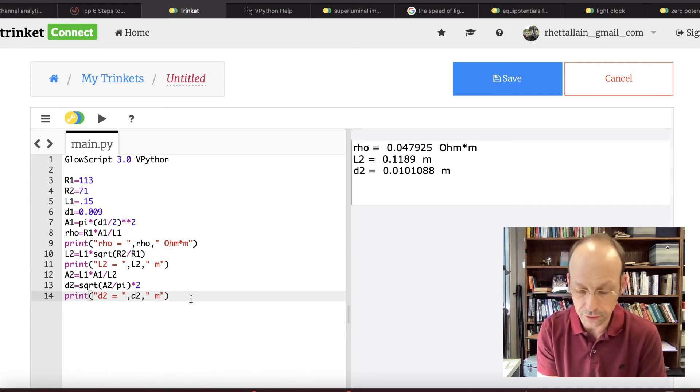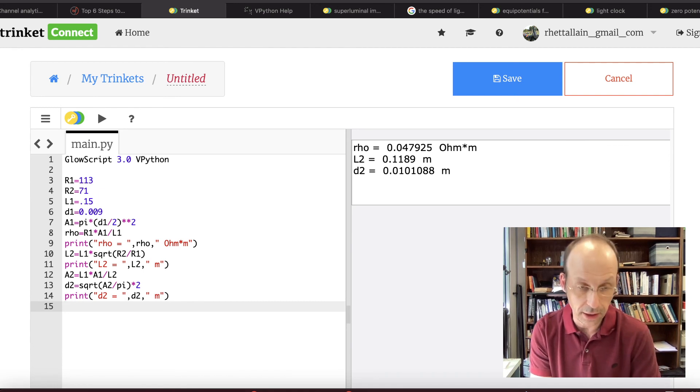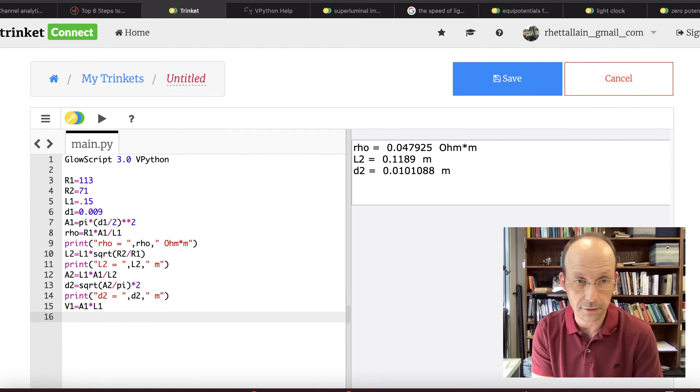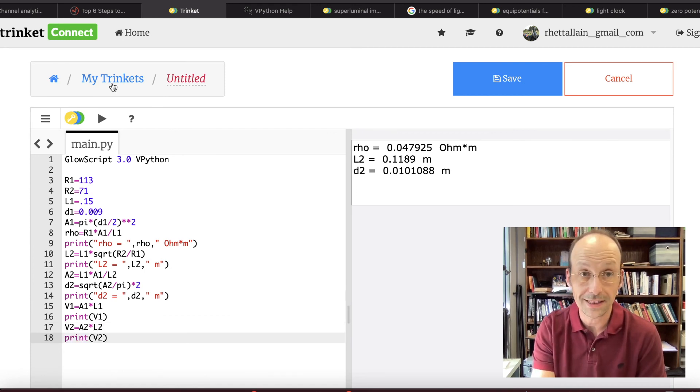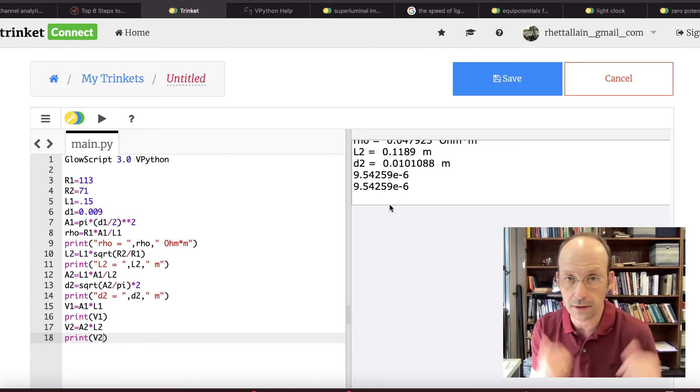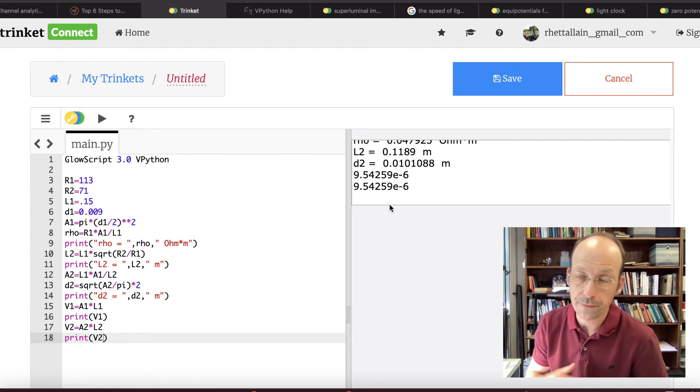Let's print the two volumes just to make sure. So I'm going to say V1 equals A1 times L1. And then V2 equals A2 times L2. And if it's not the same I'm going to be very upset. Boom. Got it. So there you go. Same amount of Play-Doh. New resistance. Done.